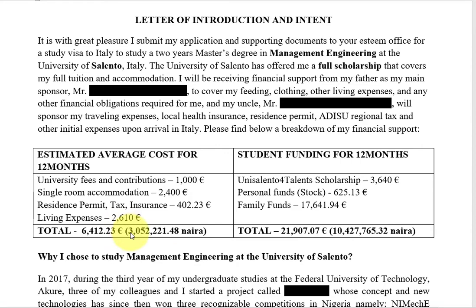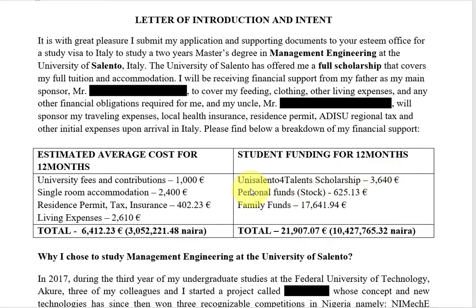I calculated all of these and the total came to 6,004.23 euros for 12 months. I converted it to Naira based on the official euro rate at that time, which happened to be about 3 million Naira. On the right side I wrote 'Student Funding for 12 Months': the value of my scholarship — converted to cash equivalent — covering university tuition fees and accommodation fees. I also had a language scholarship, which is why there's a slight difference. I wrote the value of the personal family fund support I'm receiving, all in euros or converted.